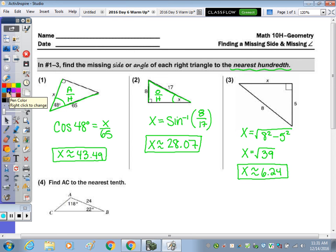Okay, the answers to 1 through 3 are given. In number 1, we were given the angle and you had to find the side. So using cosine,